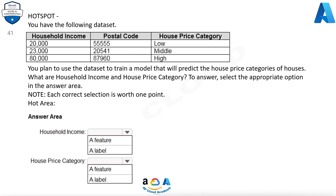The dataset shows: Household income values of 20,000, 23,000, and 80,000. Postal code values of 55,555, 20,541, and 87,960. House price category values of low and middle. The question asks: Household income — is it a feature or a label?